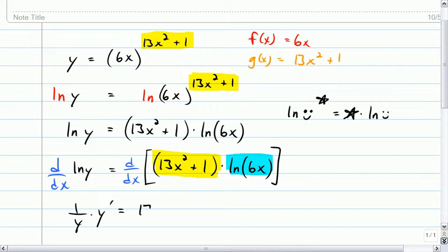13x squared plus 1, and I'll multiply by the derivative of the blue one, 1 over 6x. That's the derivative of the outer, and the inner is 6x, so its derivative is 6.